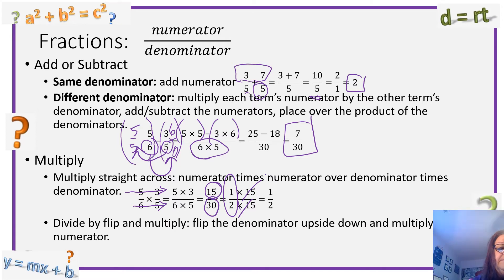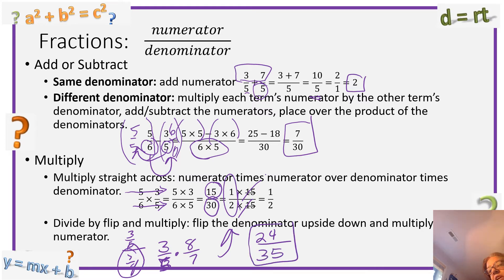To divide, simply flip and multiply. If you have something like 3 fifths over 7 eighths, we're going to take this denominator and flip it upside down. Instead of 7 eighths, it's going to become 8 sevenths. That's going to give me 3 fifths times now 8 sevenths. And now you multiply just like you did up there. 3 times 8 is 24, 5 times 7 is 35. Just flip and multiply if you're dividing fractions.